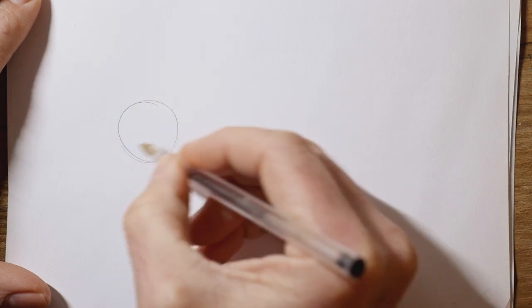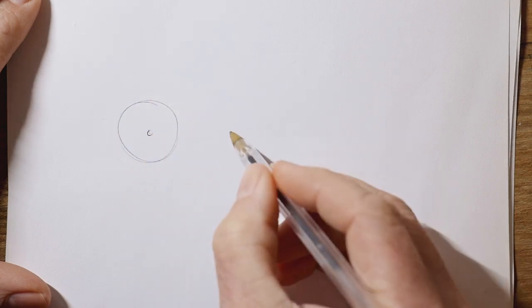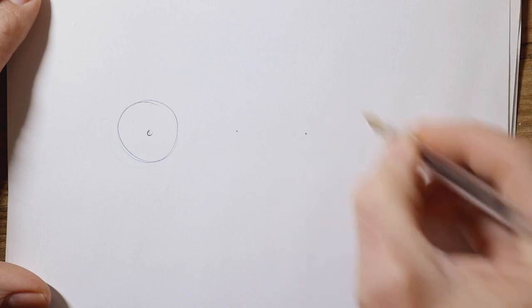So the first thing we'll do is a front wheel over here. Try to draw nice and lightly, and a second wheel, two wheels further back.